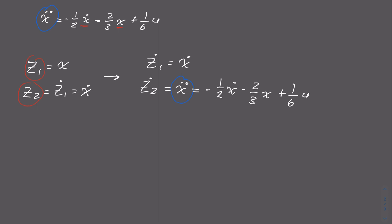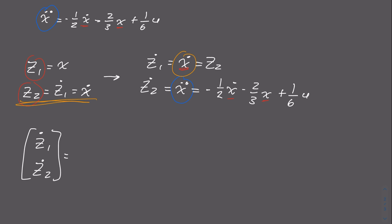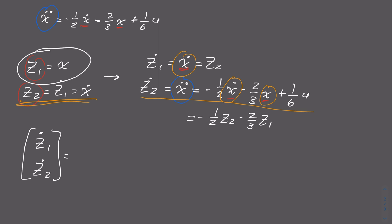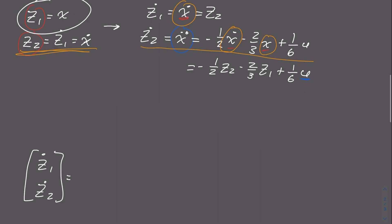We need to rewrite the equations with only z terms on the right side, since our goal is to express everything in terms of ż1 and ż2. Since ẋ = z2, ż1 = z2. For ż2, we substitute: ẋ = z2 and x = z1, giving ż2 = −(1/2)z2 − (2/3)z1 + (1/6)u, where u is our input. So: ż1 = z2 and ż2 = −(1/2)z2 − (2/3)z1 + (1/6)u.